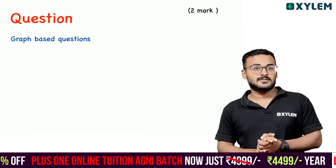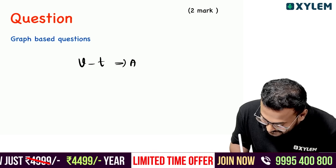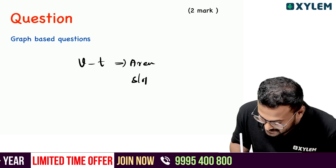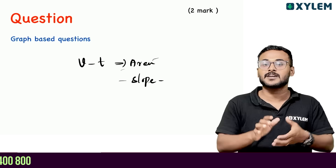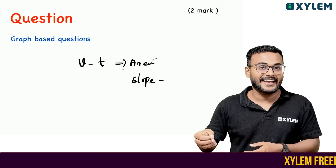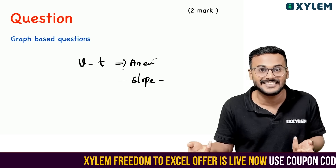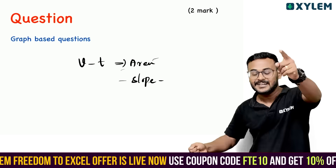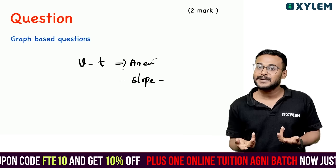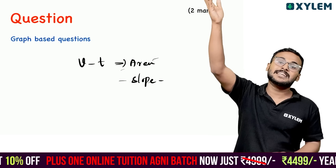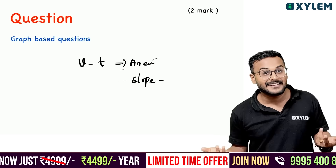Graph-based questions: What is the velocity-time graph? What is the slope? What is the position-time graph? How long will they improve? This is the freely-falling body graph — freely-falling body is uniformly accelerated motion with constant acceleration. You can see velocity and acceleration for a body.